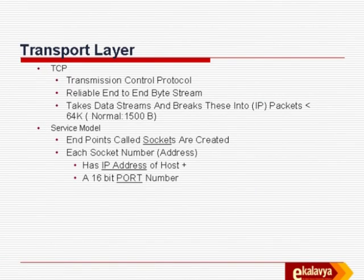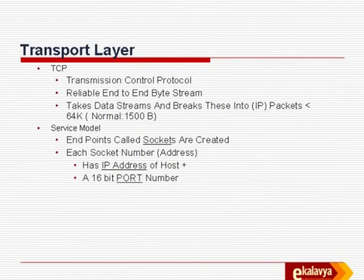TCP is called a reliable end-to-end byte stream. It takes a data stream — consider a 28-megabyte file you want to transfer. 28 megabytes cannot fit into a single packet. When you do an FTP at the application level, the FTP will connect the byte stream to the TCP protocol. TCP will keep consuming bytes and building IP packets all smaller than 64K, then send these IP packets through the IP part of the network. Because the Transmission Control Protocol is in command, it will expect an acknowledgement for every packet and ensure error-free transmission.